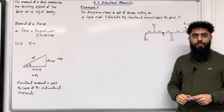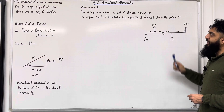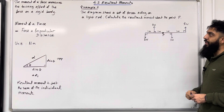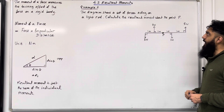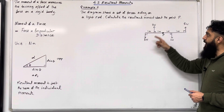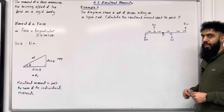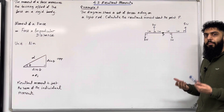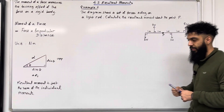Moving on to Example 2. The diagram shows a set of forces acting on a light rod. Calculate the resultant moment about the point P. Here we have four different forces, and we must calculate the moment of each individual force.